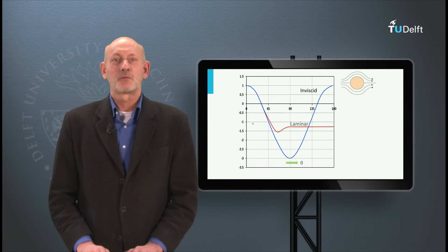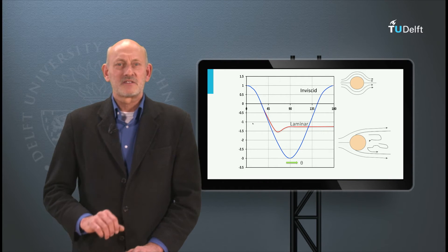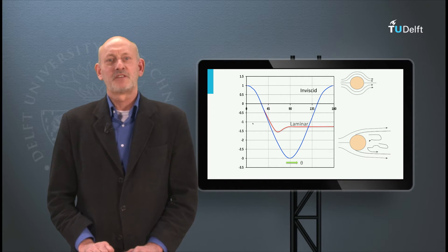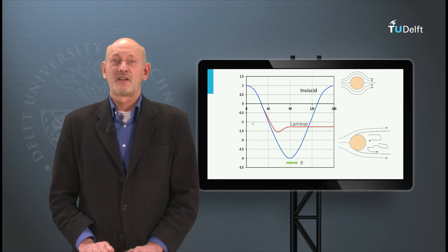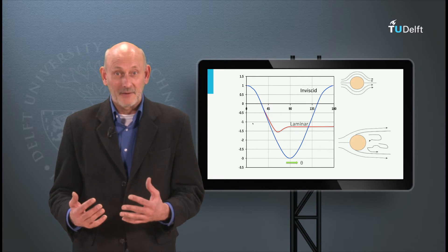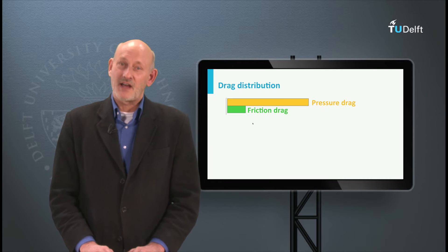In the graph this is shown with the red CP line. The result is a significant pressure difference between the front and the back of the cylinder that wants to pull the cylinder back. The pressure drag of the cylinder is high.